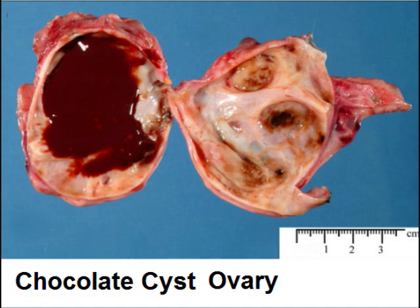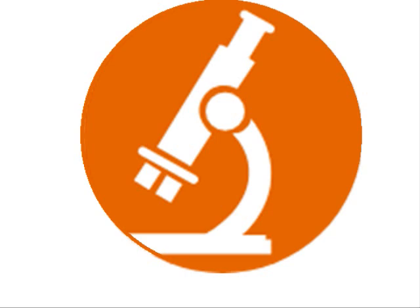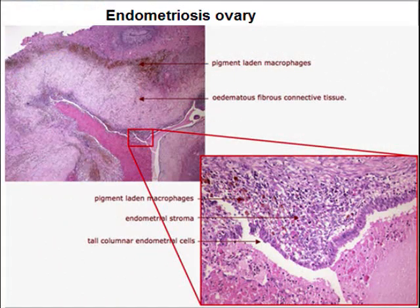There was a large ovarian cyst which was excised, and you can see it is filled with chocolate-colored thick fluid — it is called a chocolate cyst of the ovary. On microscopic examination, because the endometrial glands and stroma are responsive to hormones, cyclical bleeding and shedding of the endometrium lead to accumulation of blood forming the chocolate-colored fluid.